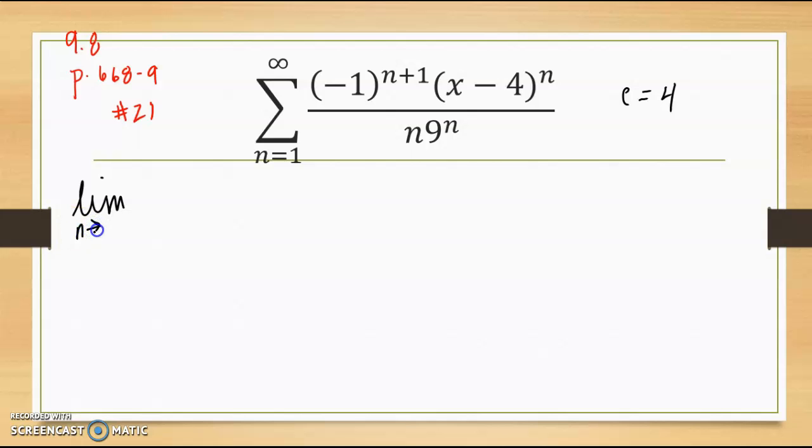So I take the limit as n approaches infinity, absolute value, x minus 4 to the n times x minus 4 to the first all over n plus 1 times 9 to the n times 9 to the first.